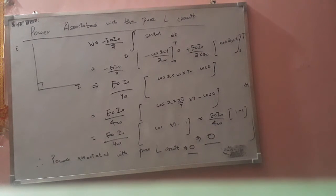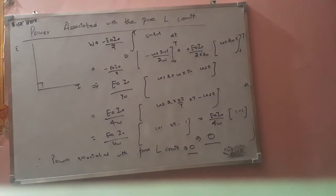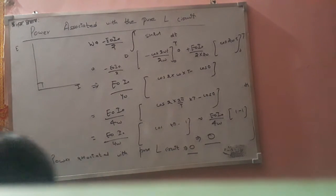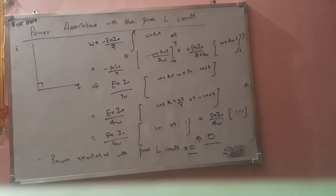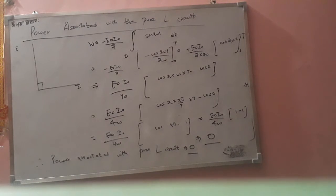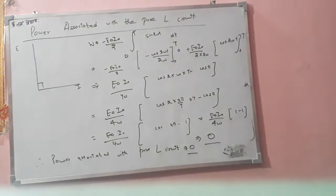Therefore, the power associated with the pure L circuit is equal to 0. In this way, we have proved that if we are considering a pure L circuit, then the power of the pure L circuit is equal to 0.